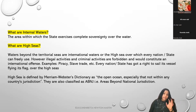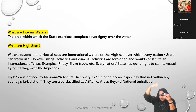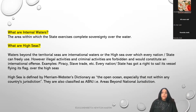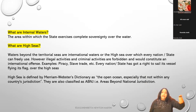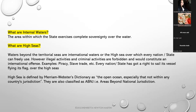Therefore, every nation or state has the right to sail its vessel flying its flag over the high seas. High seas is beyond the territorial waters limit. High seas is defined by Merriam-Webster's dictionary as the open ocean that is not within a country's jurisdiction. They are also classified as areas beyond national jurisdiction - water stretches beyond national jurisdiction that come within the definition of high sea.